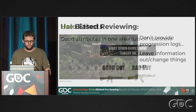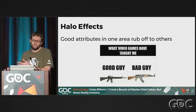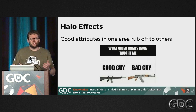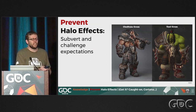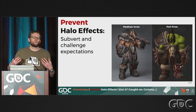Halo effects — that good attributes in one area rub off onto others. We tend to think attractive people are also smart and kind. This applies to games: if your game looks nice and polished, people will be more forgiving than if it looks rough. We can prevent this by subverting and challenging expectations — for a long time orcs were bad guys, then they started being shown as good, subverting the halo effect. And of course we use halo effects all the time by making good characters look good and evil characters look evil.